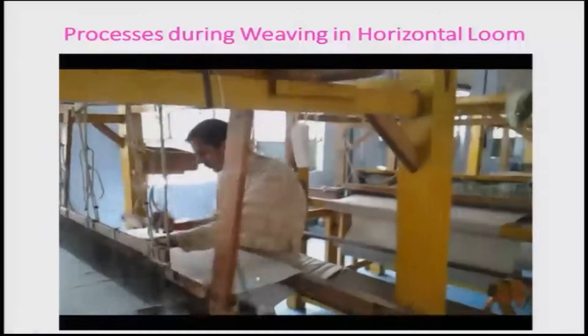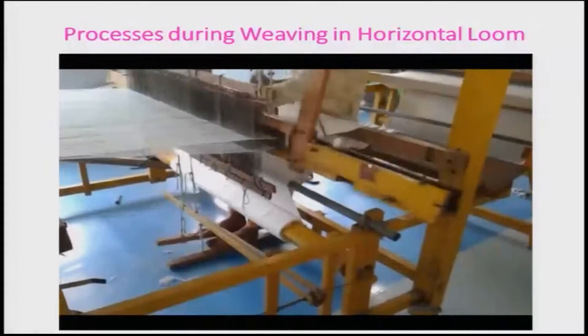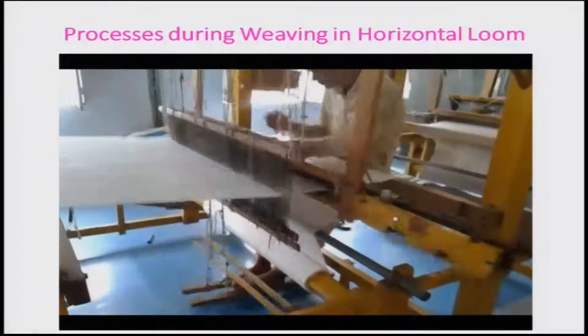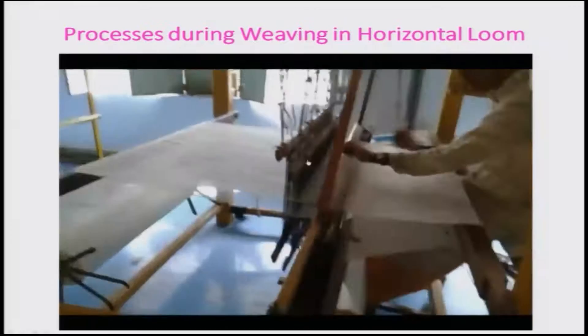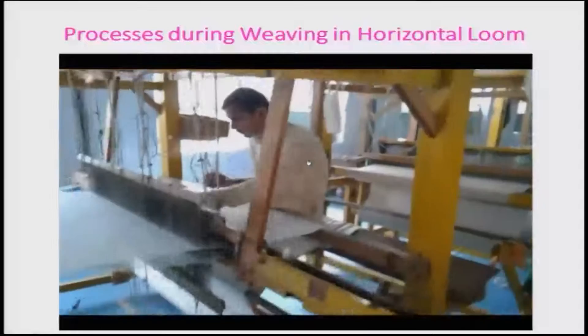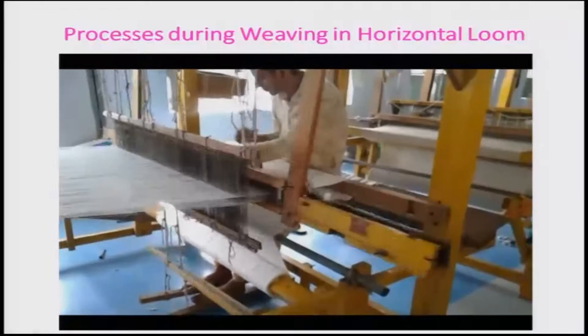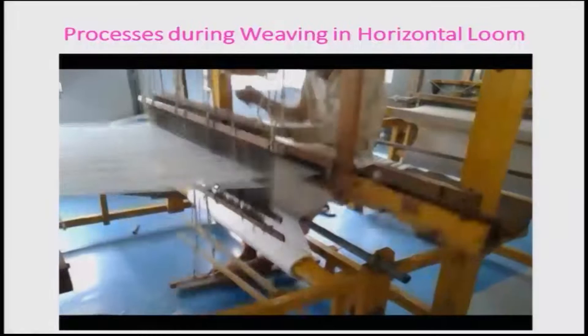Let us look at the process of weaving with the help of a video. Here you can see the beater or sword moving, the reed, and the shuttle moving. When he moves his hand to the left, the shuttle moves left; when to the right, it moves right. The leg makes the heddle move up and down, creating a V-shaped space through which the shuttle moves, so the weft goes through the warps. Then you press it towards your side so the cloth is made.